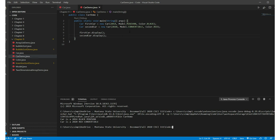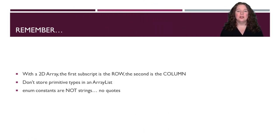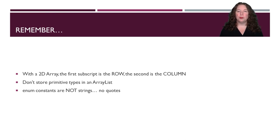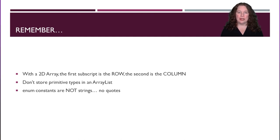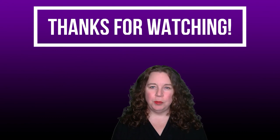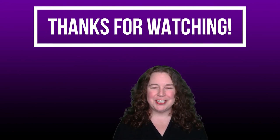Couple of reminders: with arrays, the first subscript is always the row and the second is always the column. You don't store primitive types in ArrayLists — those are for objects like Strings, Employees, or Cars. Enumerated constants are not Strings — you don't use quotes when you use them. They are their own type, not a String type. Hopefully this gave you more information about arrays. Come back next time for chapter 10 — have a great week!